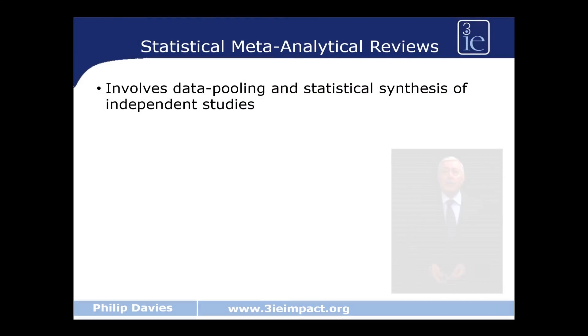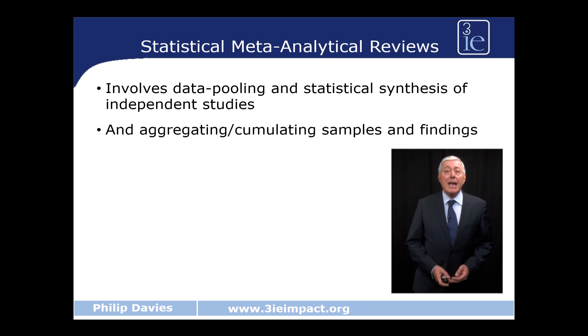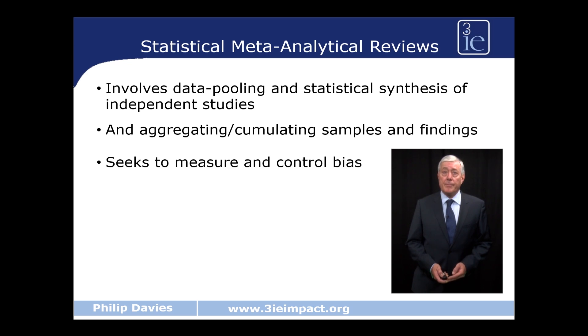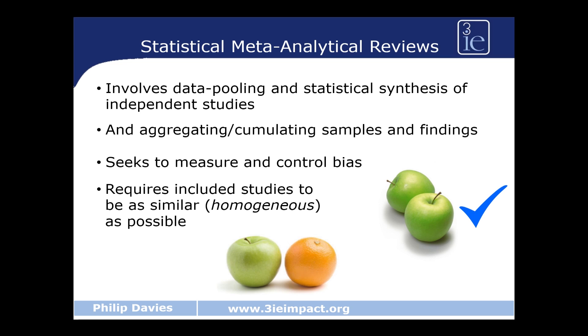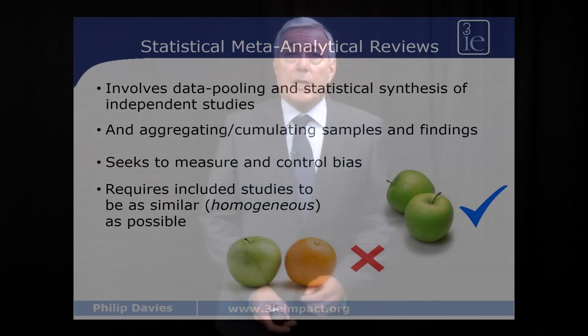Let's start with statistical meta-analysis. This is where we are able to pool similar studies into a combined sample, allowing us to get an aggregative or cumulative estimate of the overall findings from however many studies we have included. What we're trying to do with a statistical meta-analysis is to measure and control for bias. To do this we have to make sure that the studies are as similar as possible — comparing apples with apples, not apples with oranges.